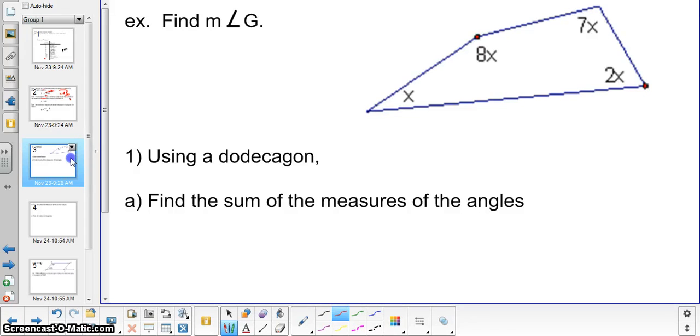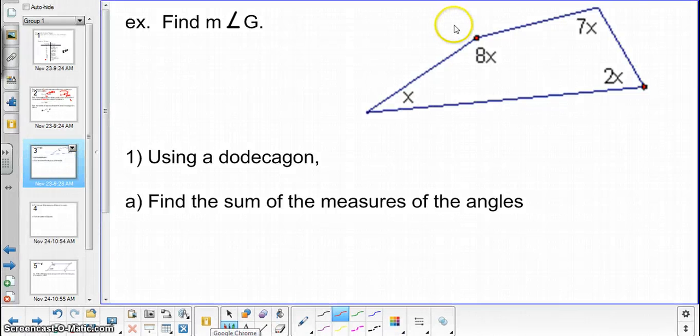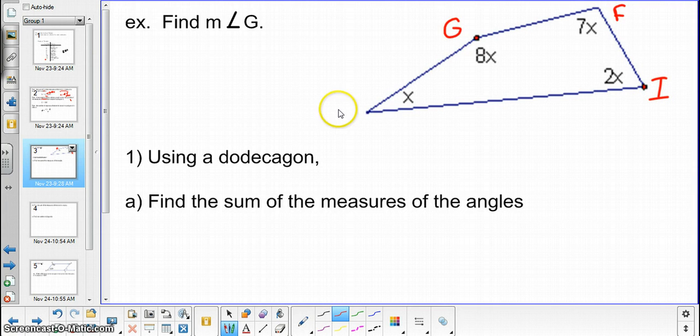Moving on to our first example, we're trying to find the measure of angle G. First of all, on this example, the vertices are missing. So go ahead and put the vertices on there, G, F, I, H. And it's a four-sided figure, so we have a quadrilateral from the last unit. We know that those angles add up to 360 degrees. So if we add x plus 2x plus 7x plus 8x, we get that equivalent to 18x. Therefore, x is 20. And the measure of angle G would therefore be 160 degrees.